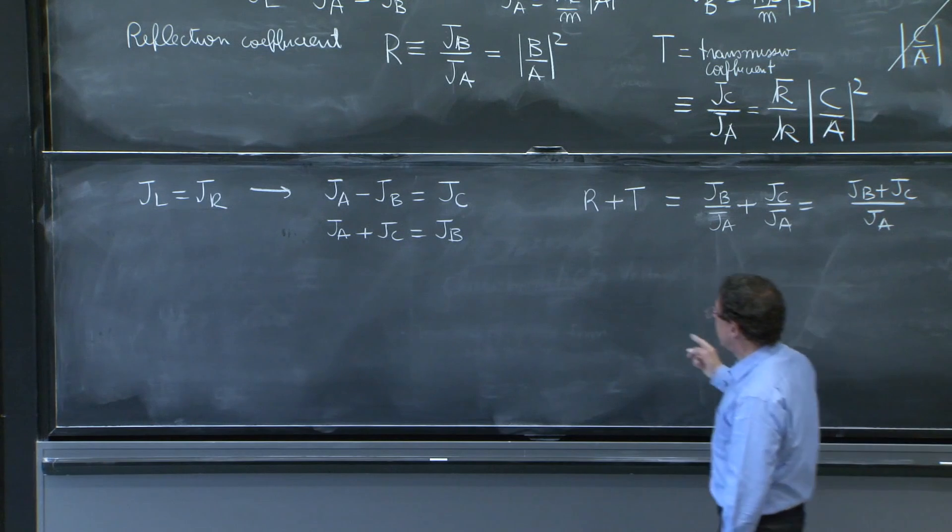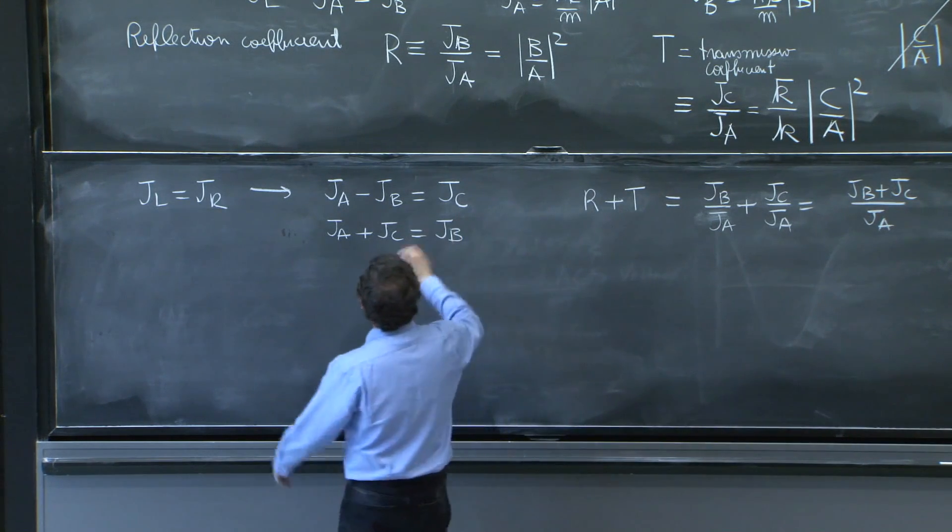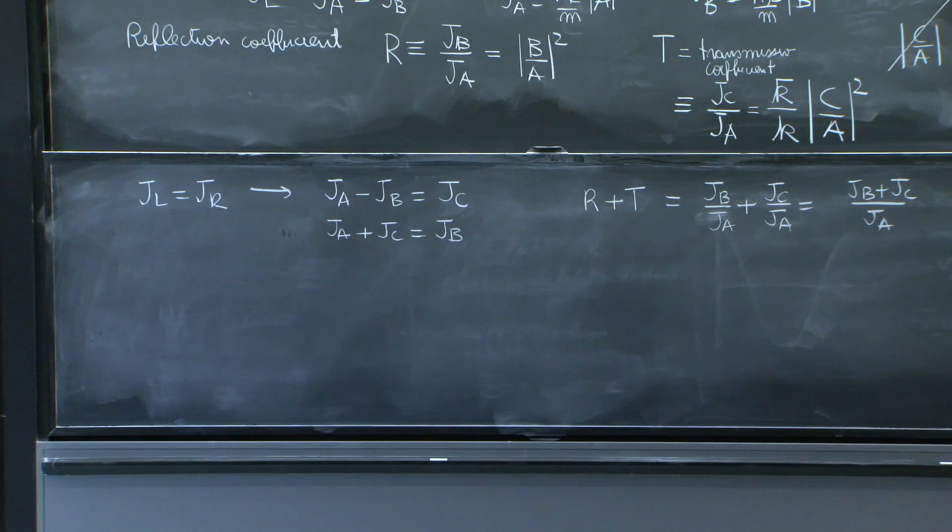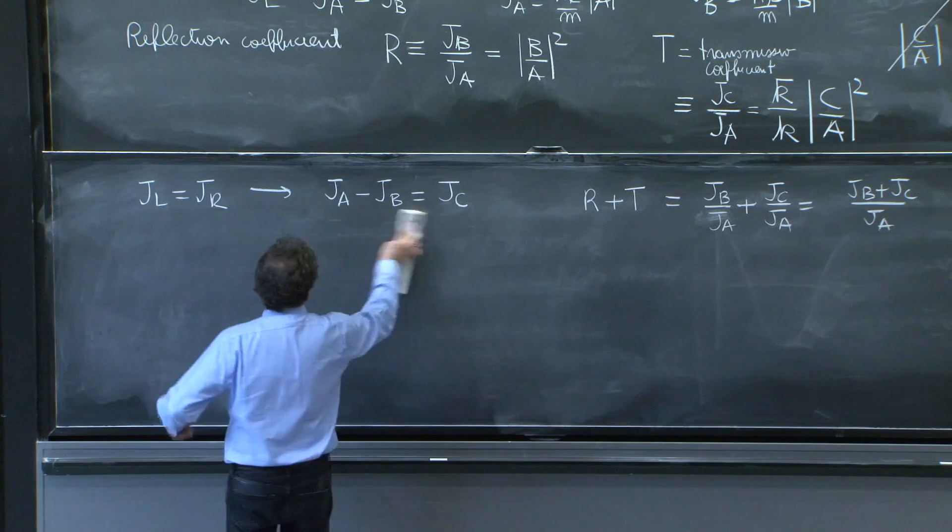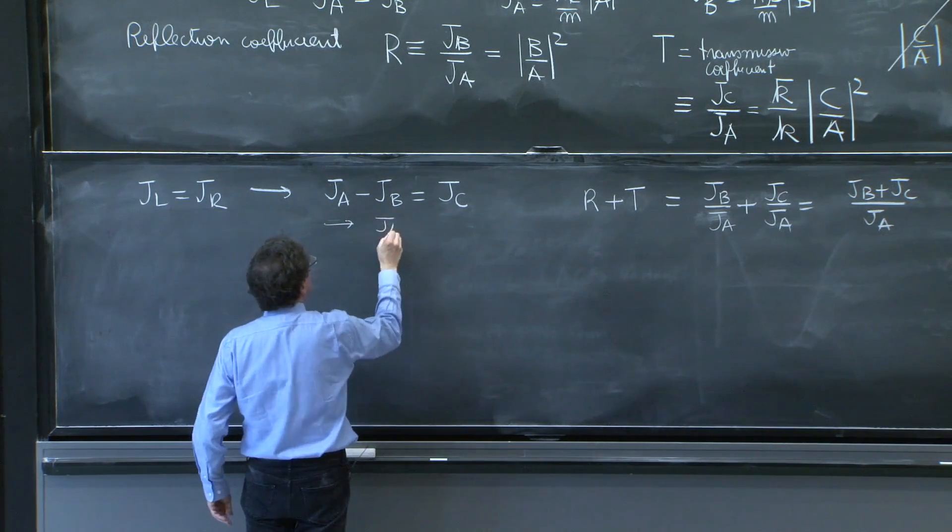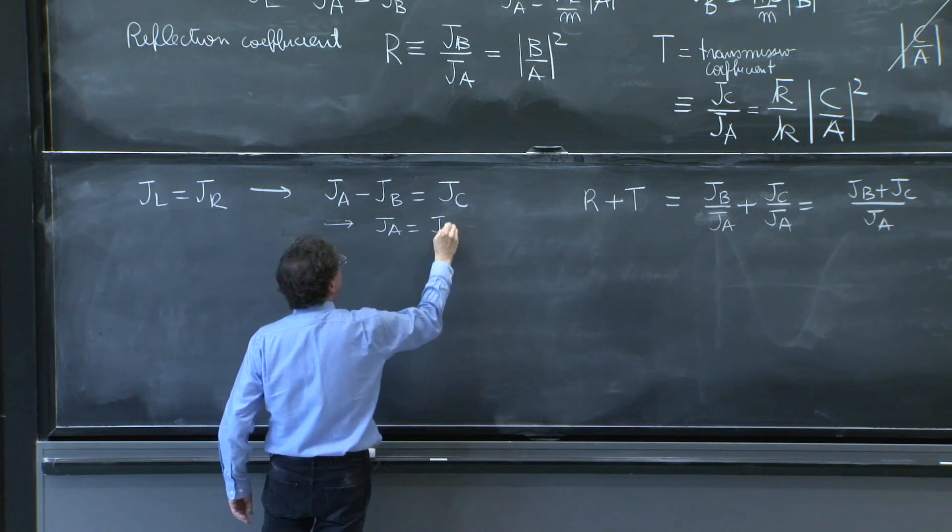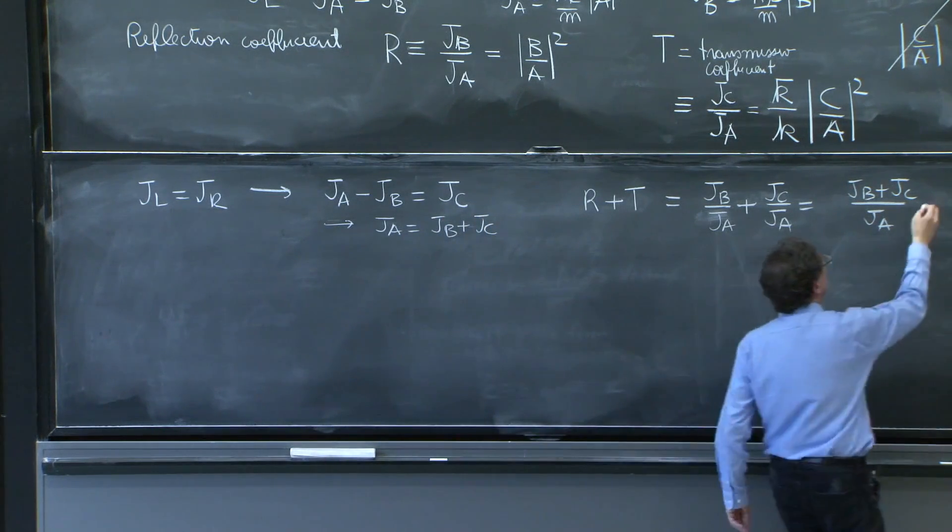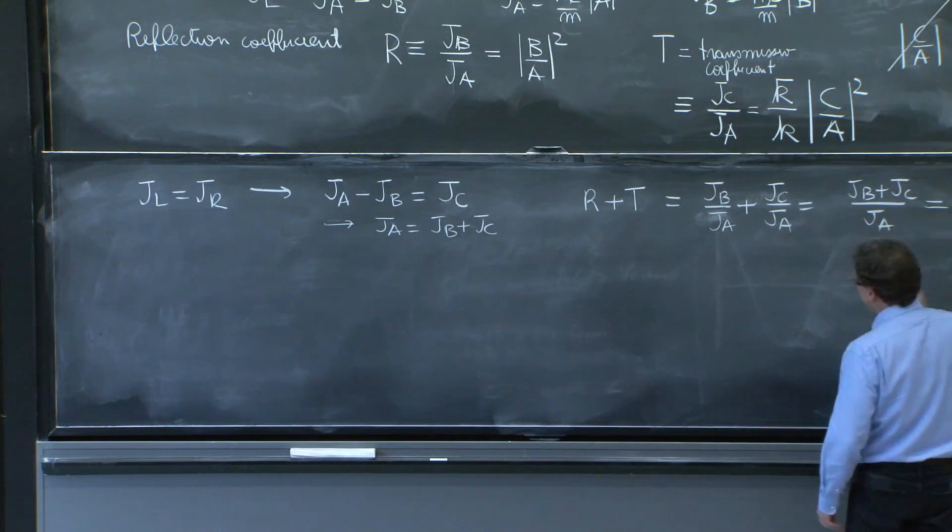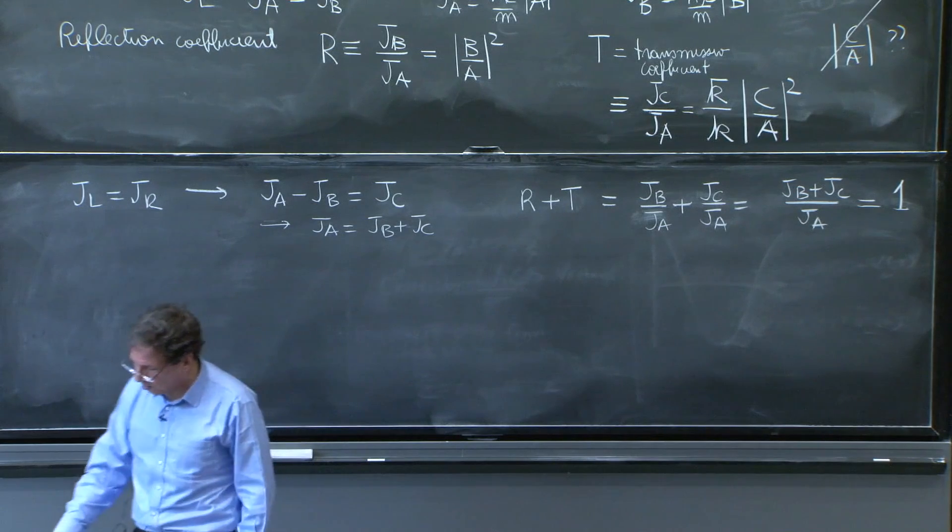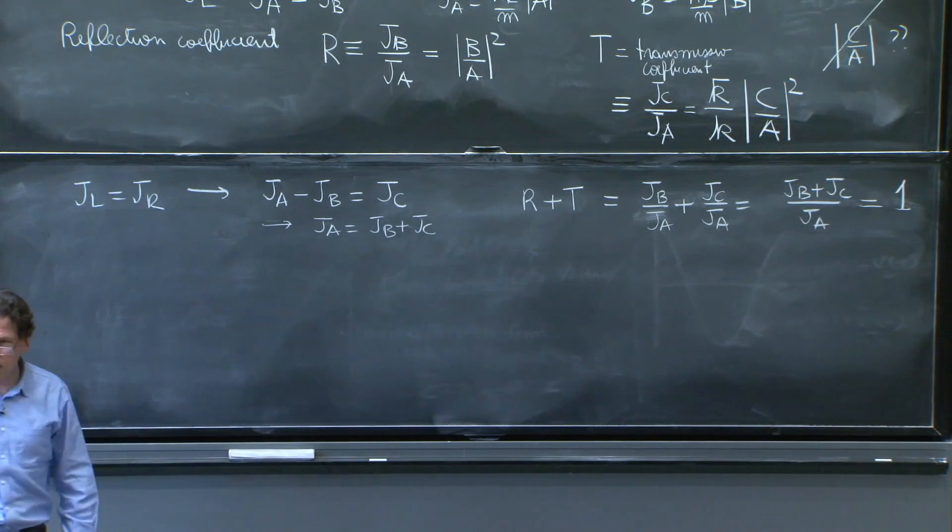I'm sorry. I got this wrong. Yes. I should have passed the b to the other side. This, of course, implies ja equals jb plus jc. And this ratio is equal to 1, which is something you usually want when you define reflection and transmission coefficients. They should add up to 1.